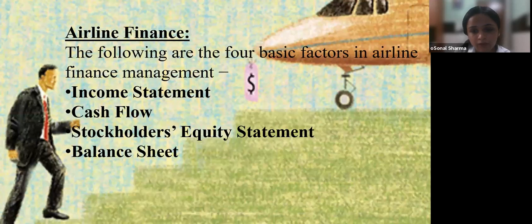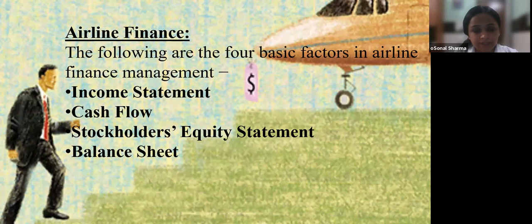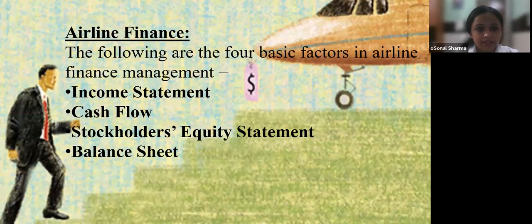There are four basic factors in airline finance management. The income statement is a report that shows business managers and investors whether the airline made or lost money during a specific period. The cash flow statement provides information on cash receipts and payments and the net change in cash due to operating, investing, and financing activities of an airline during the period.